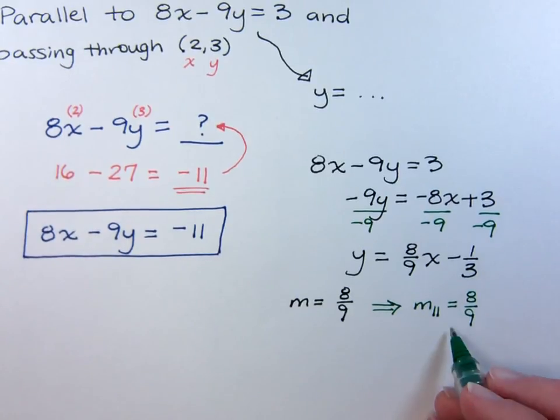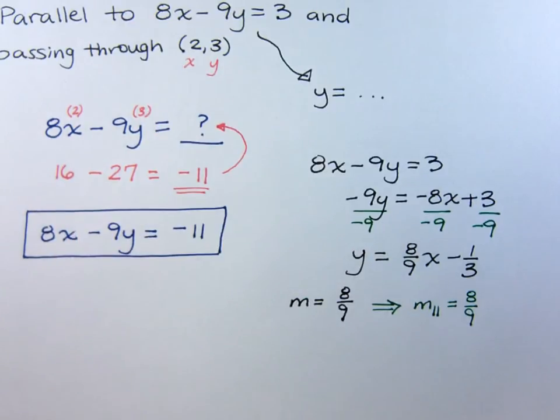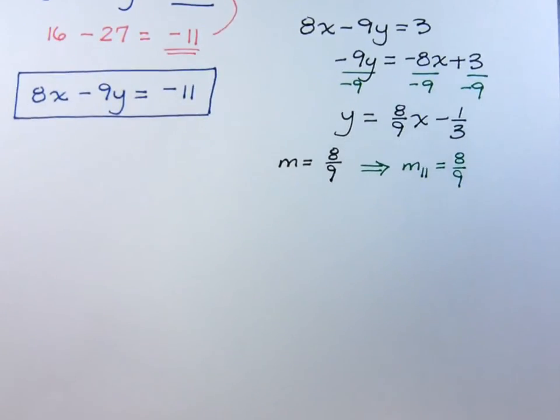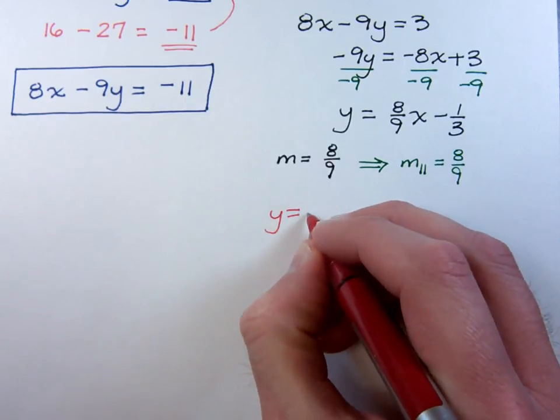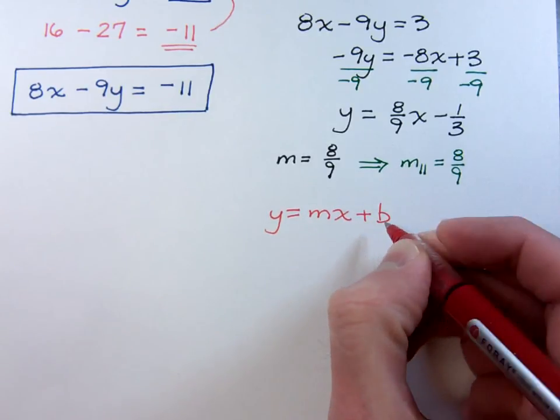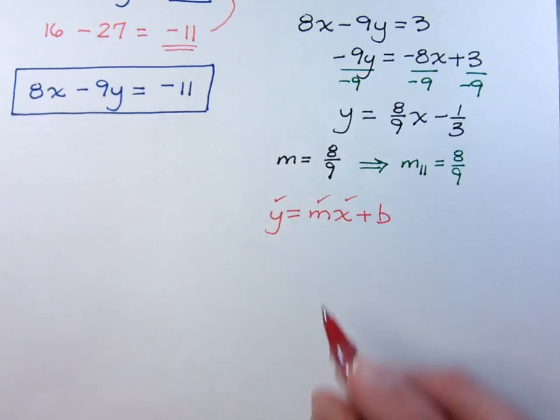So if I use this slope and I use the point, then I can find the equation of a line that's going to satisfy this. Let's go ahead and use the slope-intercept form, y equals mx plus b. With y equals mx plus b, you have your slope, and you have your x, and you have your y.